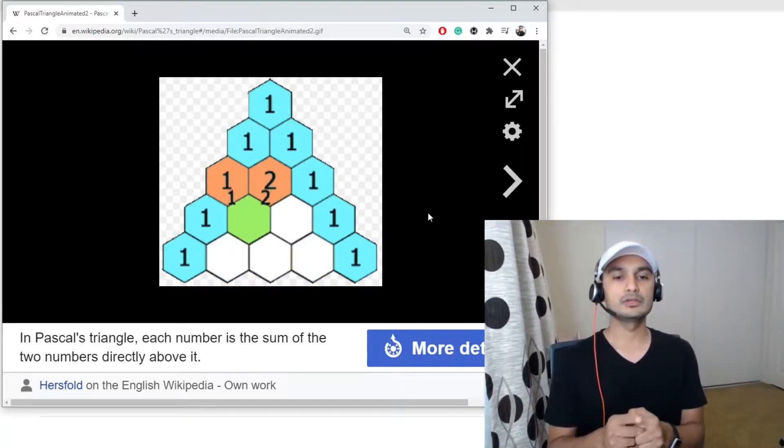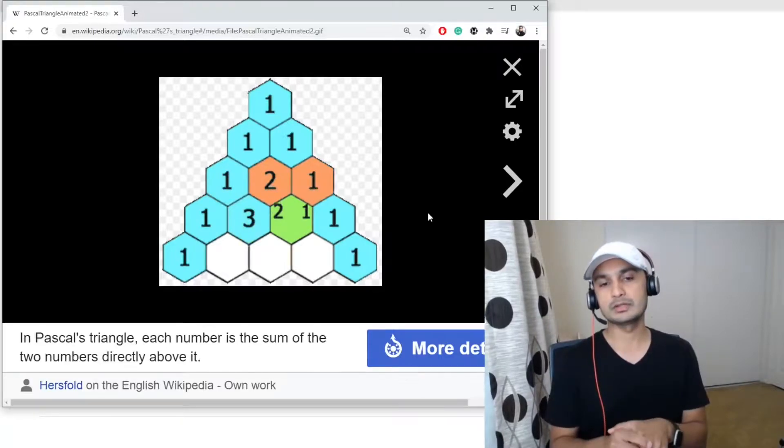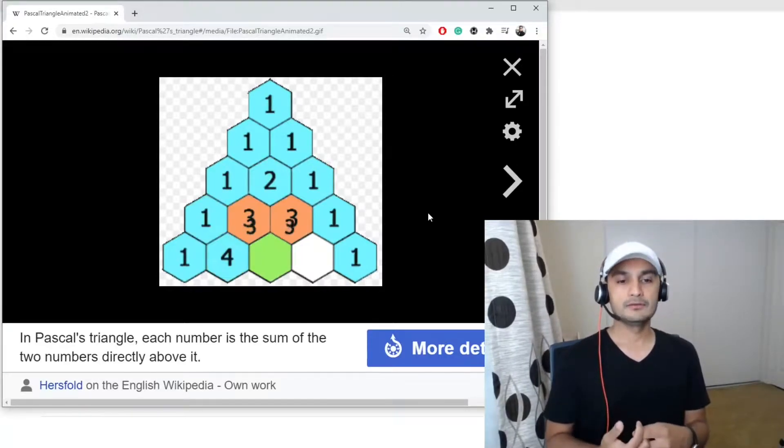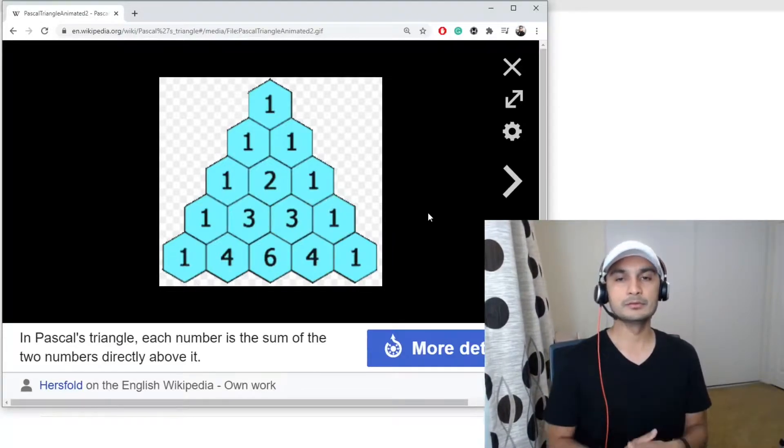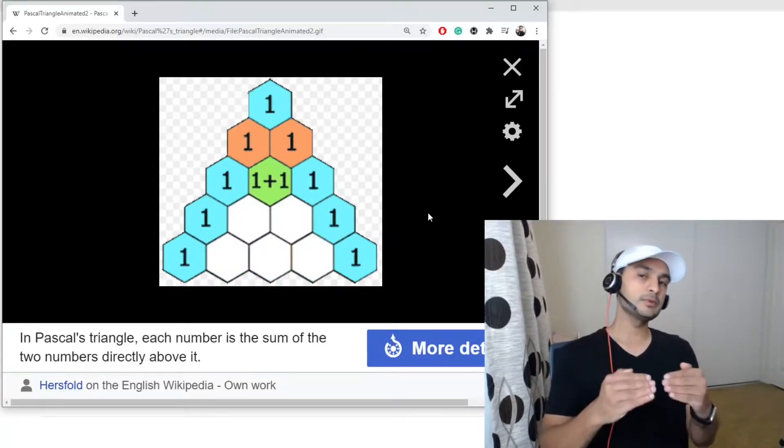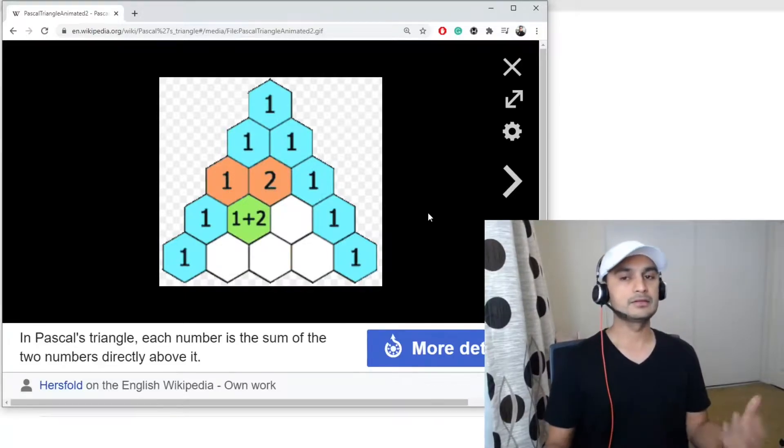That forms the third row. Fifth row: three plus one is four, three plus three is six, three plus one is four. So likewise, each previous row helps you form the next row and that's your Pascal's triangle.